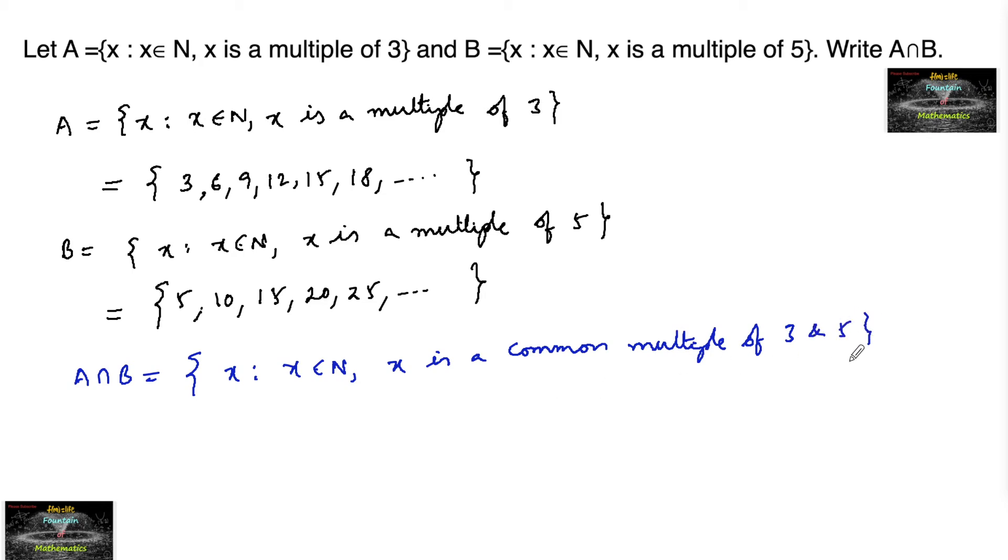So what can be the common multiple of 3 and 5? Hence we can consider the LCM. LCM of 3 and 5 is nothing but 15. We can observe that 15 is a number which is common in both and the next number can be 30 here and here also 30.